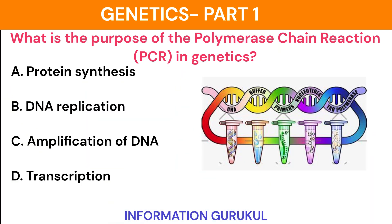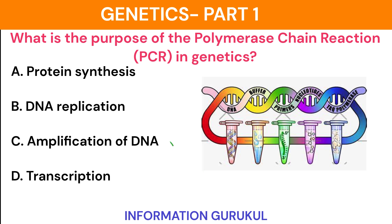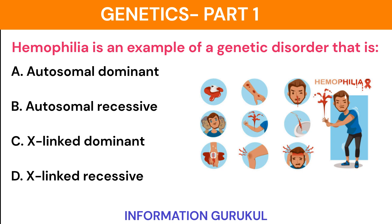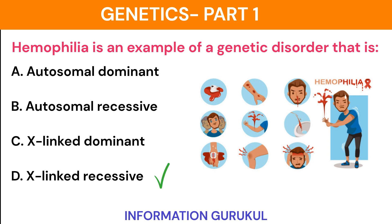What is the purpose of the polymerase chain reaction (PCR) in genetics? Amplification of DNA. Hemophilia is an example of a genetic disorder that is X-linked recessive.